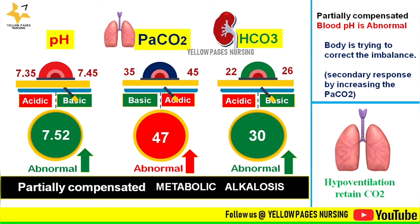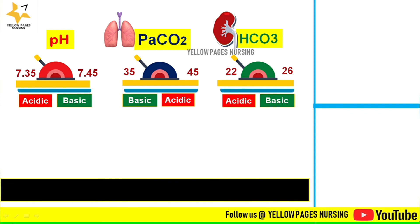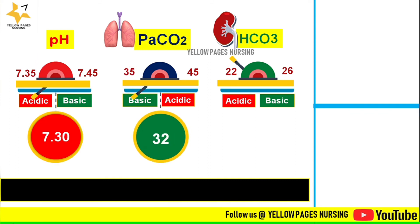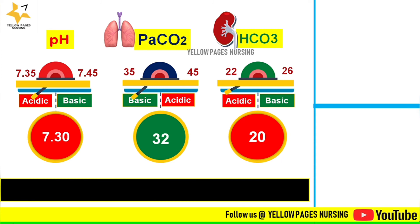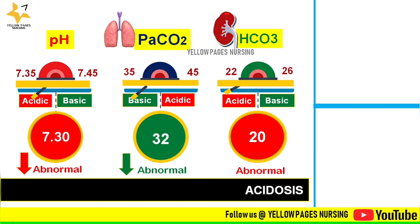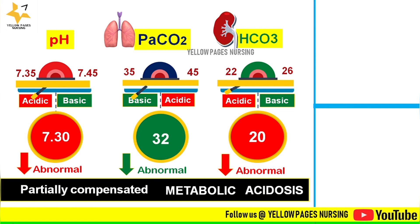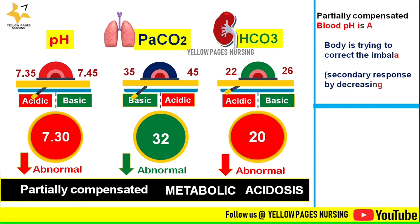Next example: pH is 7.30, PaCO2 is 32, and bicarbonate is 20. pH is below the normal range indicating acidosis; bicarbonate is also below normal at 20, also indicating acidic — acid along with acid — so this is metabolic acidosis. PaCO2 is also abnormally low. This is partially compensated metabolic acidosis.